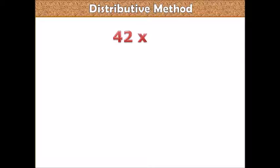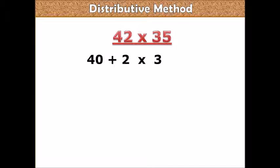We have 42 times 35. 42 times 35. You break them apart, you have 40 plus 2, that is 42, times 35, or 30 plus 5. So 42 times 35, that is 40 plus 2 times 30 plus 5.